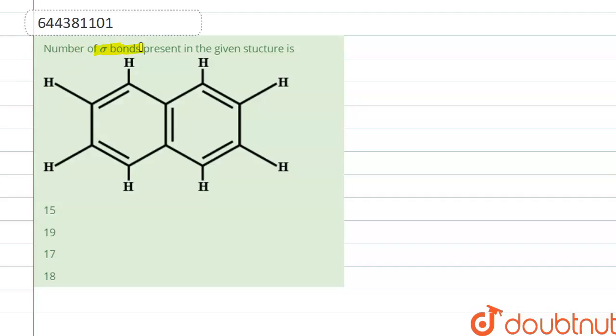Number of sigma bonds present in the given structure. Right, so in this given structure we have to find out the number of sigma bonds present.